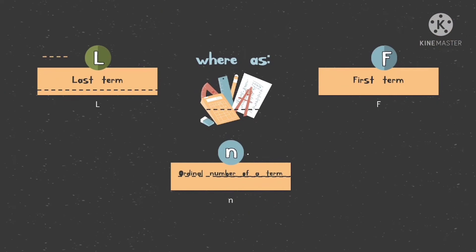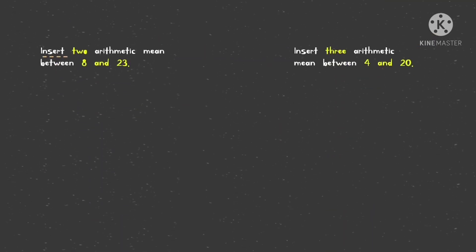Here, L is the last term, F is the first term, and N is the ordinal number of a term. The problem says: insert 2 arithmetic means between 8 and 23. So we write 8 and 23 with 2 means in between. Another problem: insert 3 arithmetic means between 4 and 20, so we place 4 and 20 with 3 means between them.